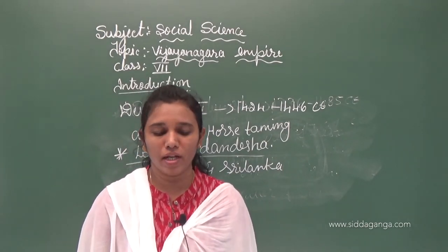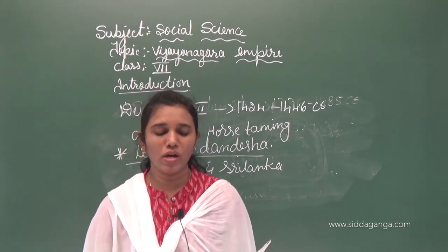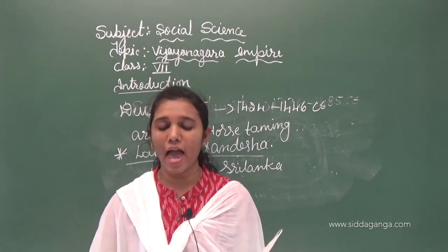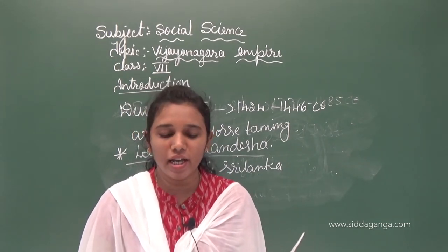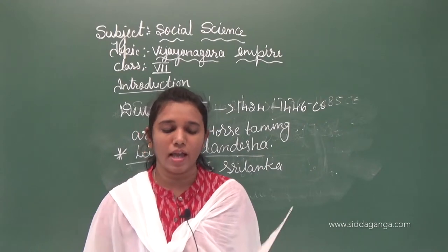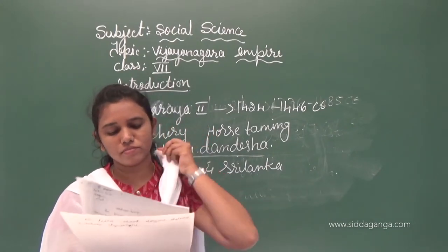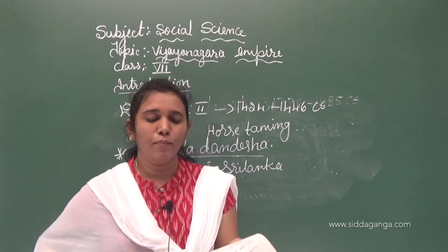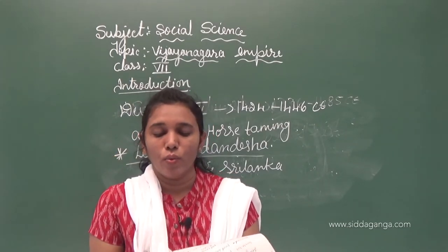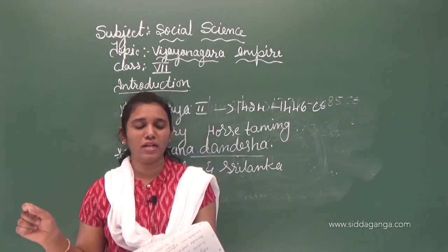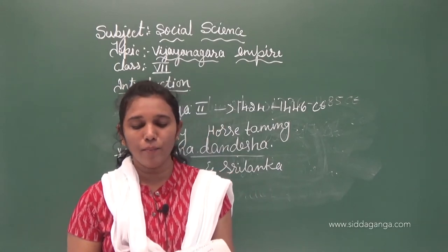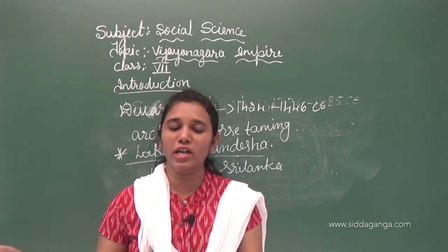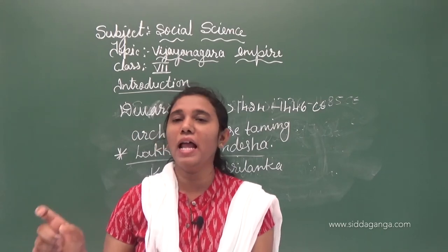Persian ambassador Abdul Razak visited the Vijayanagara kingdom during Proudha Devaraya's period and stated: 'I have seen such a rich kingdom like Vijayanagara for the first time. The capital has seven forts and the Raja's army has lakhs of soldiers.'